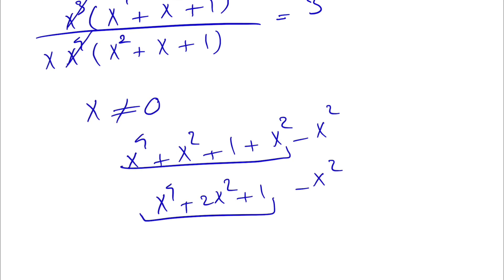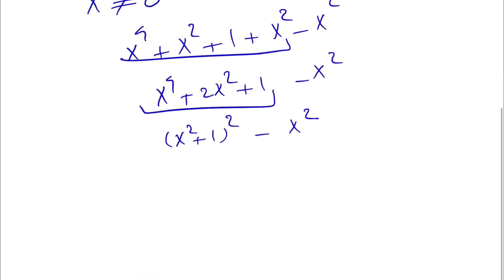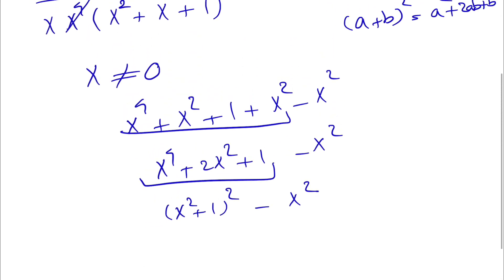This is a familiar expression. We know that (a+b)² equals a² plus 2ab plus b². So x to the 4 plus 2x squared plus 1 is (x squared plus 1) squared. Then we have a difference of squares, where a² minus b² equals (a minus b)(a plus b).